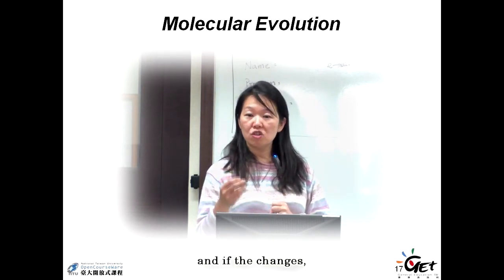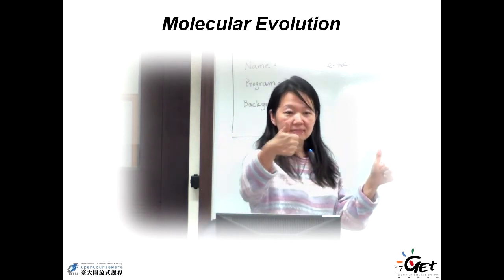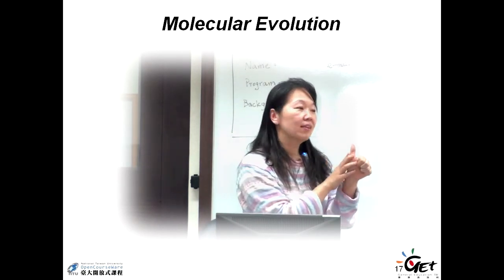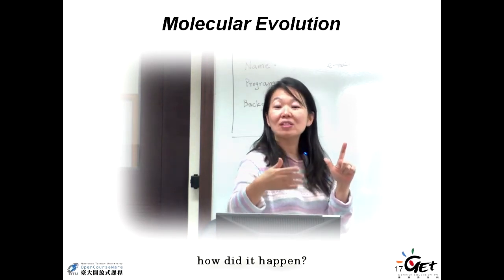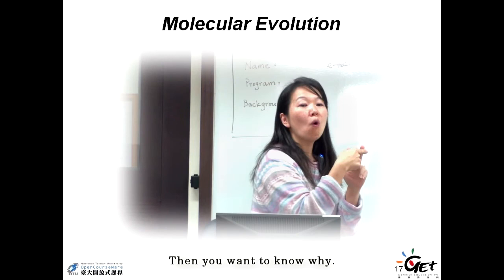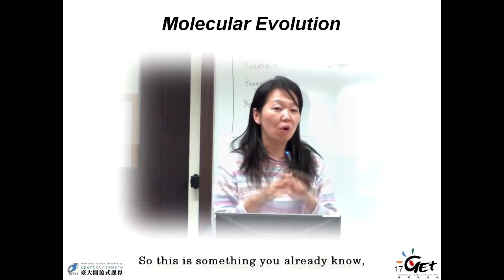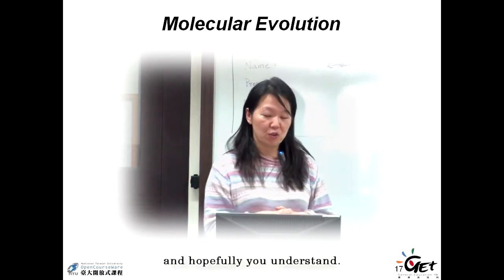If you switch the word evolution to change, then this becomes more obvious. We are interested in the changes at molecular level. And if it changes, as a biologist, we know. What? What is the change? What are the changes? And you want to know how. How did it happen? Then you want to know why. So that's the mechanism. This is something you already know. We just put the things together and hopefully you understand.